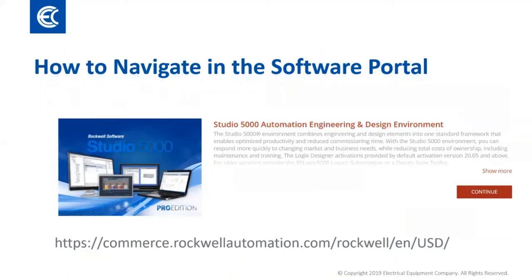The software portal is a new and constantly evolving tool with product options and functionality improvements added frequently. You can buy, download, and manage software and the associated contracts all from the portal's interfaces. To demonstrate navigating through the environment, I'm going to walk through the process of selecting and ordering a single install of Studio 5000 Pro.